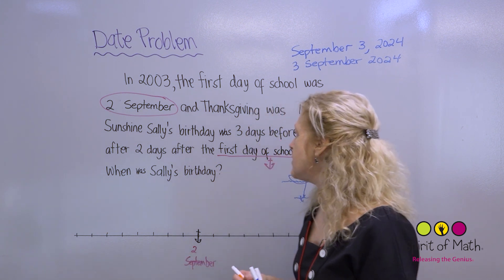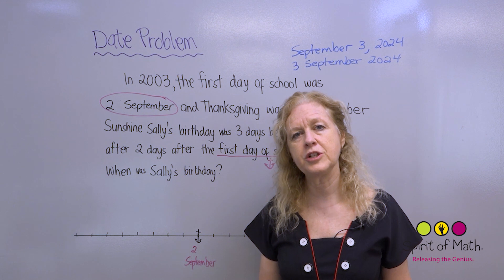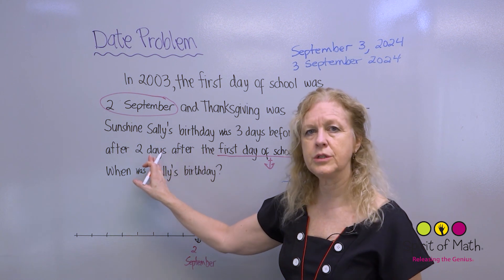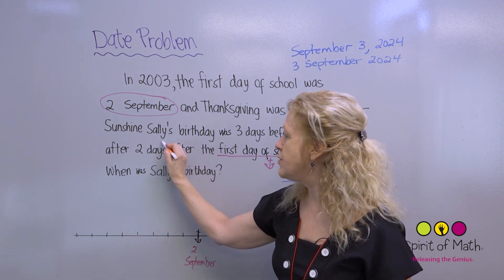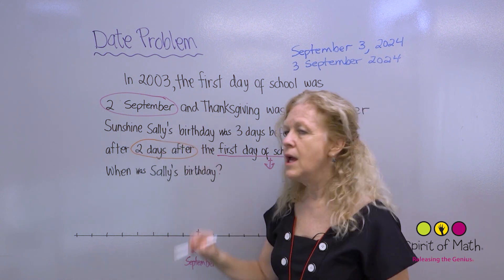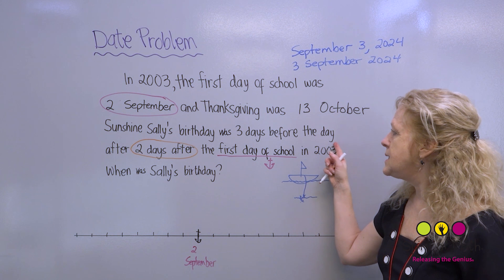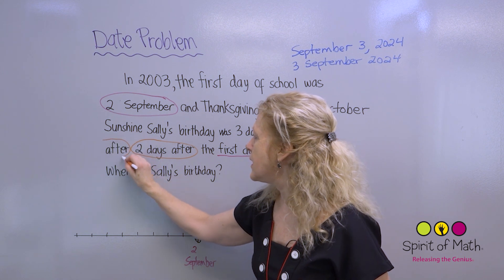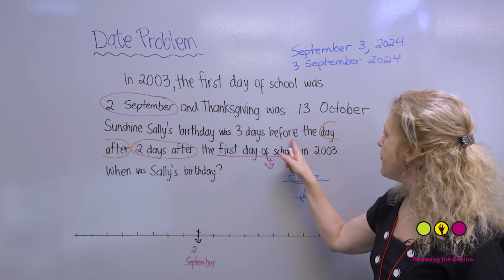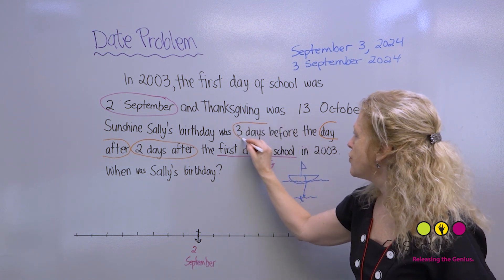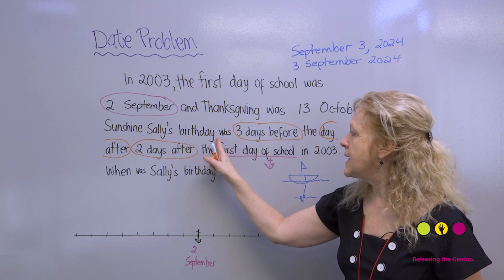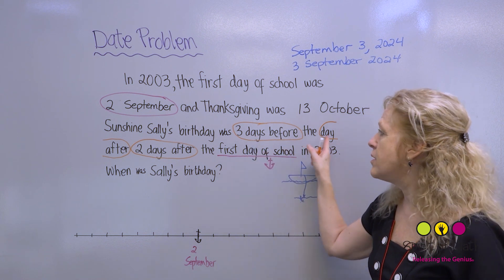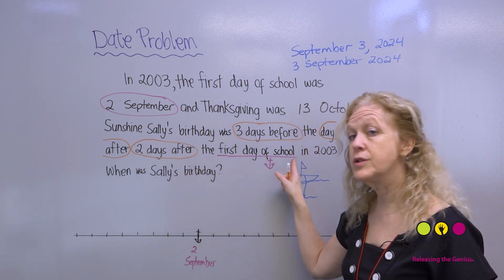Now I'm going to circle all the information that will help me get the answer, starting from the anchor and going backwards. The first piece of information just before the anchor is '2 days after.' Then going back further it says 'the day after.' And then going back again it says '3 days before.' Then I reach 'Sunshine Sally's birthday was,' so I know I'm finished. So the sequence is: 3 days before, the day after, 2 days after the first day of school.